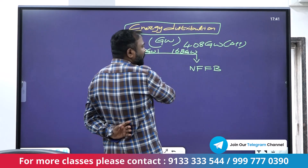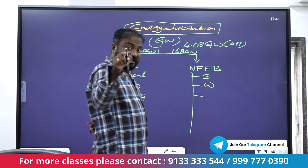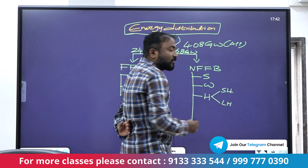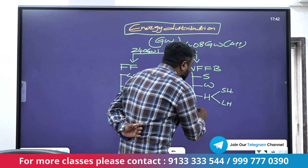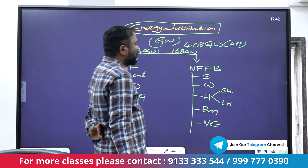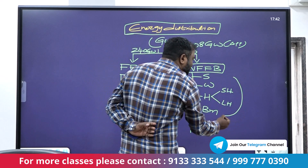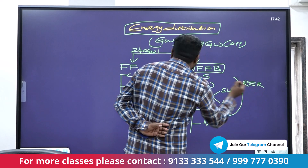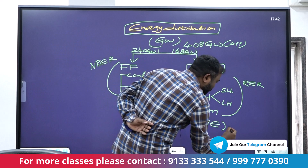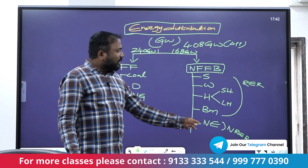The remaining approximately 168 gigawatts comes from non-fossil fuel based energy, which includes solar energy, wind energy, hydro power — both small hydro and large hydro — biomass, and nuclear energy. Nuclear energy is a non-fossil fuel based energy resource and is classified as non-renewable.